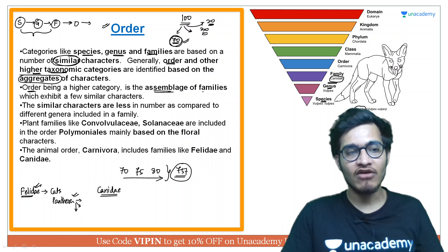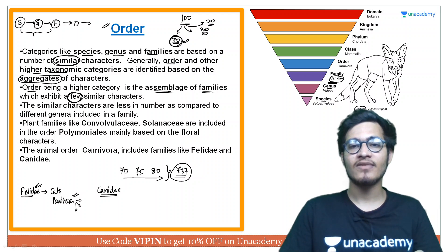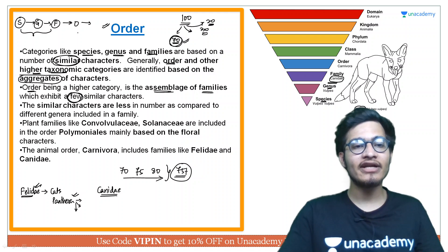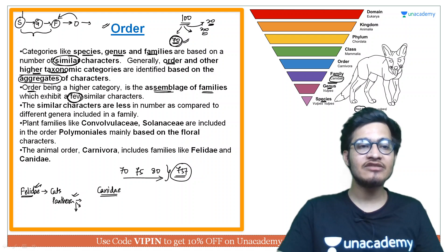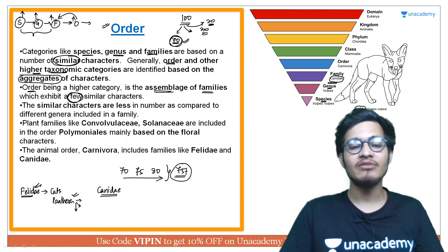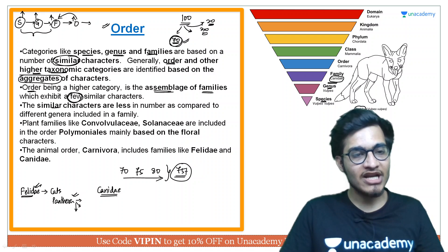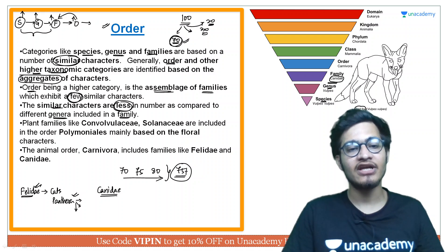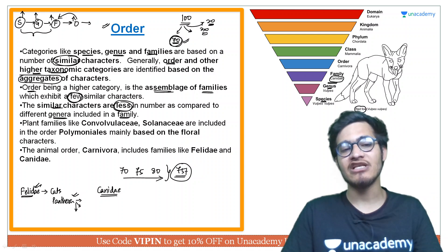Order, being a higher category, is an assemblage of families which exhibits few similar characters. Genus contains related species, family contains related genera — so order will contain related families. That is very obvious. Species had the most characters in common; at genus level it was a little less, at family a little less, and at order even fewer similar characters are seen compared to different genera included in a family.